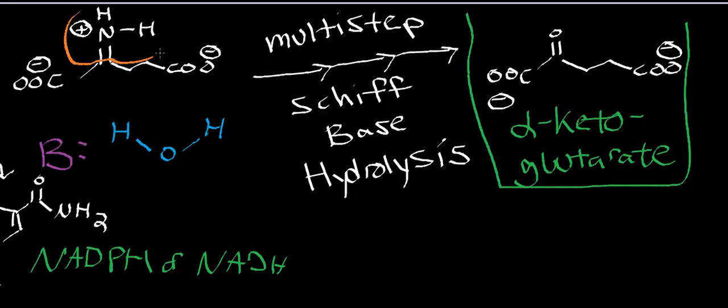This group right here is effectively going to get replaced with a carbonyl. The carbonyl we have is characteristic of alpha-ketoglutarate. We're going to take the Schiff base glutamate and convert it to alpha-ketoglutarate.